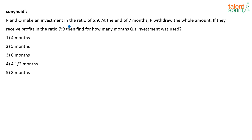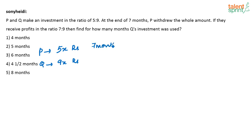What is to be done here? P and Q are making an investment in the ratio 5 is to 9. So let us assume that P is investing 5X rupees and Q is investing 9X rupees. At the end of 7 months, P withdrew the whole amount. So P has invested 5X rupees for 7 months, and Q — let us say Y months — has invested for Y months.